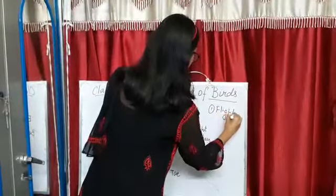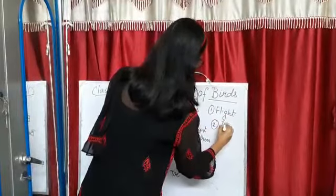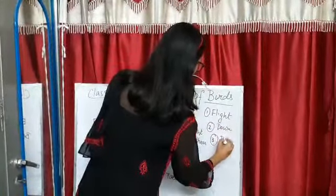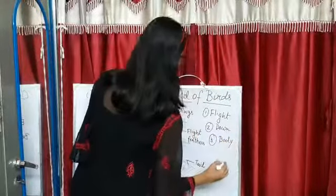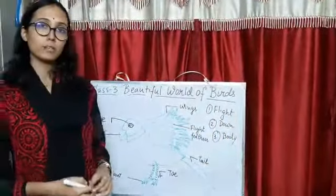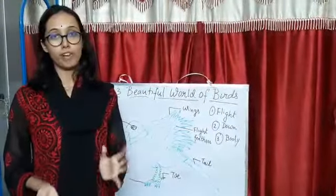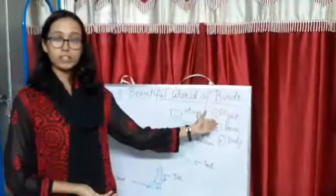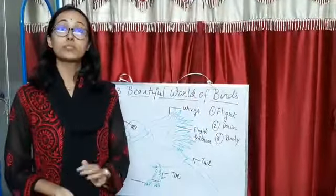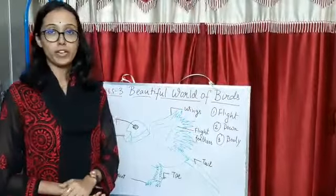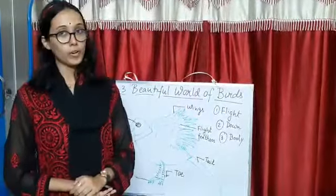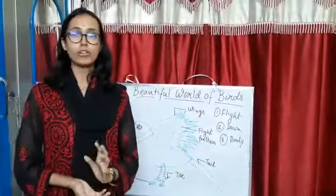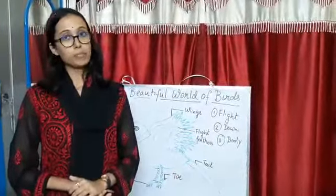The three types of feathers are: flight feathers, down feathers, and body feathers. Flight feathers are generally long and flat, and they help birds to fly. Down feathers act as a warm sweater — they protect the bird's body from the cold weather. Body feathers cover the bird's body and give shape to it.